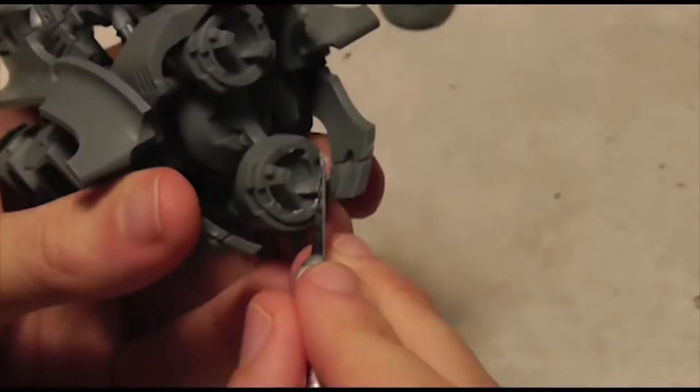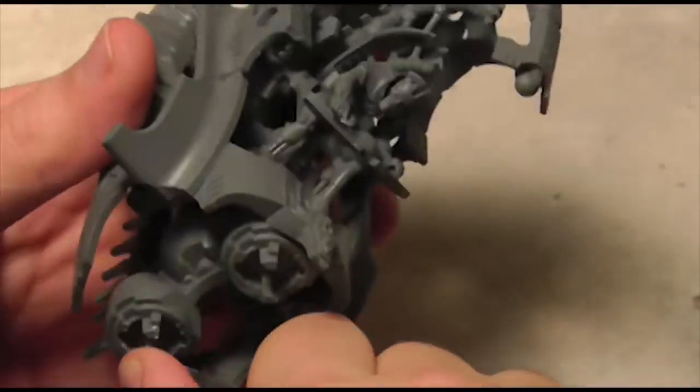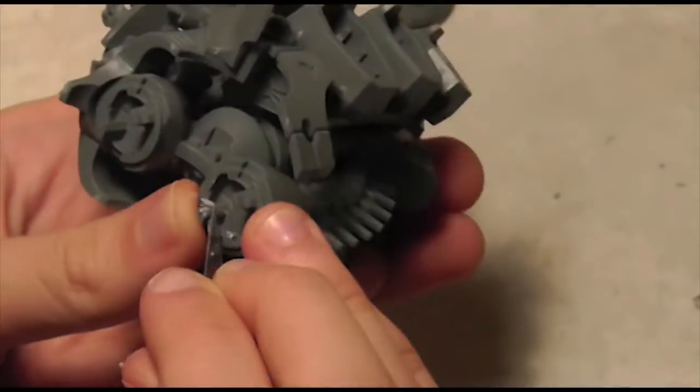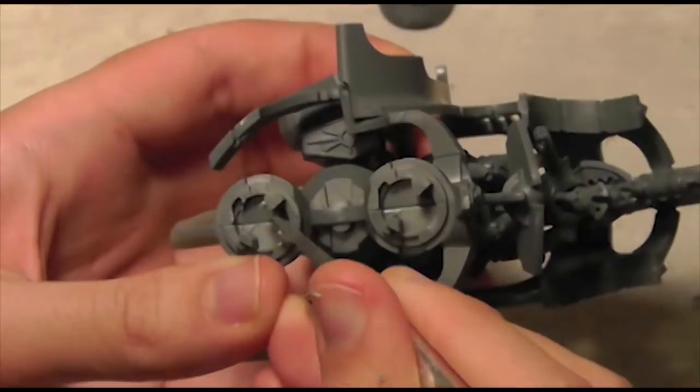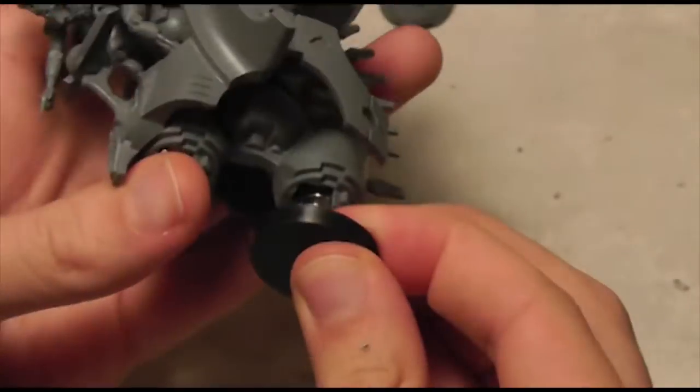I start preparing the cockpit for magnets by shaving the connection pegs and test fitting the magnets until they fit. These ones are the ¼ inch by 1/8 inch magnets. Although the numbers sound small, these magnets are one of the biggest and most powerful you'll ever need in miniatures building.